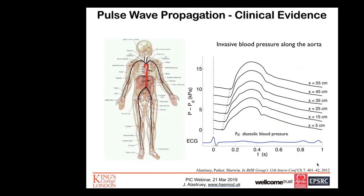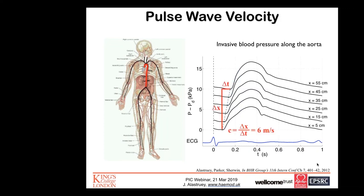Going back to the invasive blood pressure measurement along the aorta, we can now better understand that the pressure signal is shaped by the propagation of the pulse wave, either from the heart to the periphery or back from the periphery to the heart. We can also measure the speed of propagation of the pulse wave, which in this case is about six meters per second. In a normal cardiac cycle of about one second, the pulse wave has enough time to travel from the ascending aorta to the periphery and back to the heart multiple times.